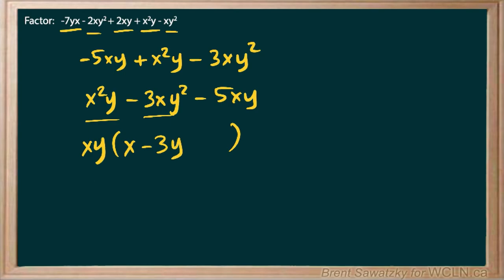We also need another y. So there we go there. And xy times what gives us this last term? And that would be a negative 5. And so there we go. We have it all factored out there.